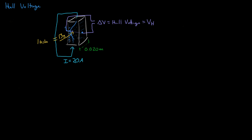Now let's get around to actually calculating what is that Hall Voltage. Given that the electrical conductance of the material is 4 times 10 to the 7th (Ω·m)⁻¹ — that's the conductance of the material. And we're also going to say it has an electron mobility of 0.001 meters squared per volt-second, which is just how easily the electrons flow through the material. So we have the conductance, the mobility of the electrons, and also the dimensions and the amperage.